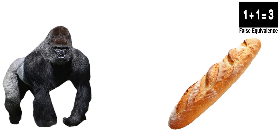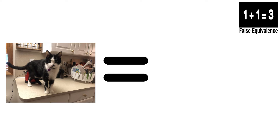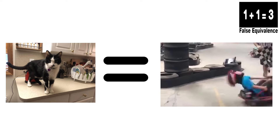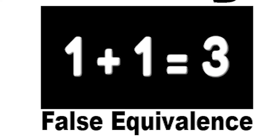False equivalence. False equivalence happens when two unrelated things are compared as if they are the same. For example, letting your cat walk on the kitchen counter is just like letting a toddler drive a car — equates vastly different situations as if they were identical.